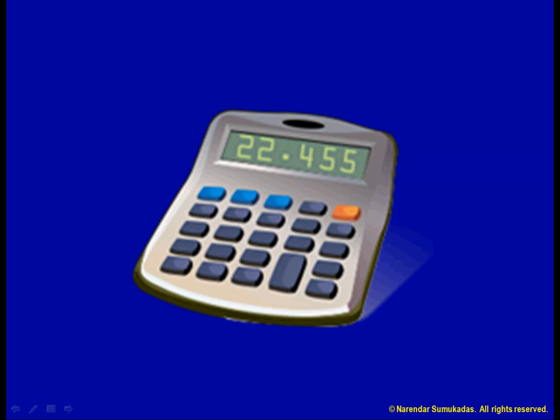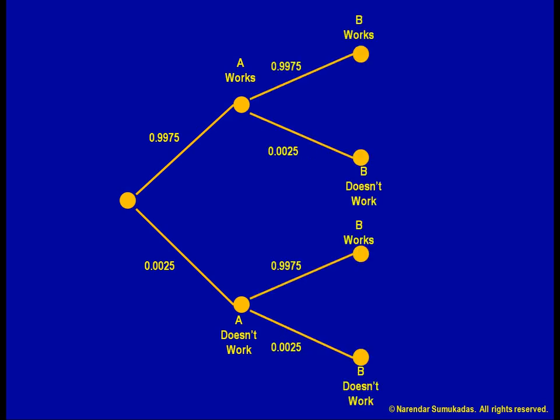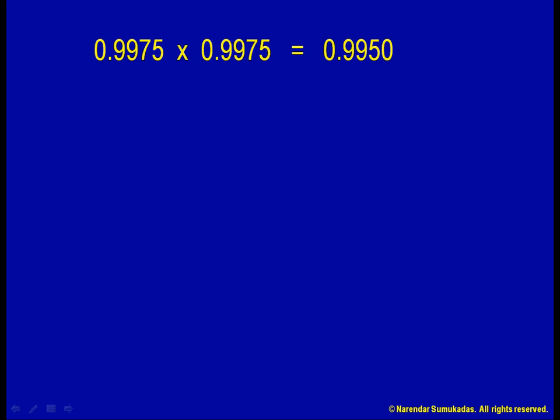So now each of the components for making the calculator has a 99.75% chance of working correctly. Here is the first component, which is 99.75% reliable. Then I add the second component, which is also 99.75% reliable. What are the chances that both of these components will work correctly? We are drawing a probability tree diagram to see all the possible combinations. The probability that both components will work correctly is 99.75% times 99.75% or 99.5%.